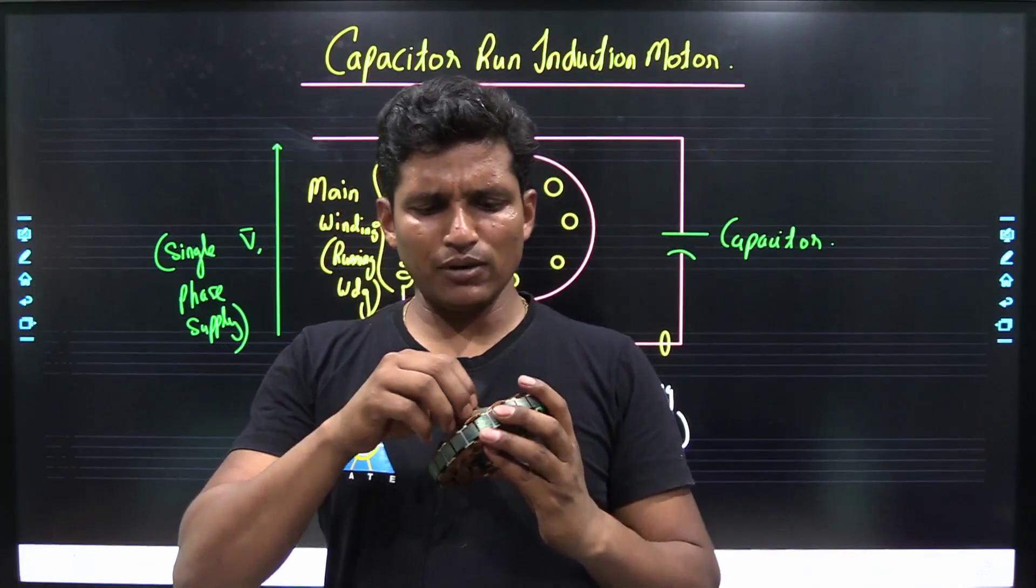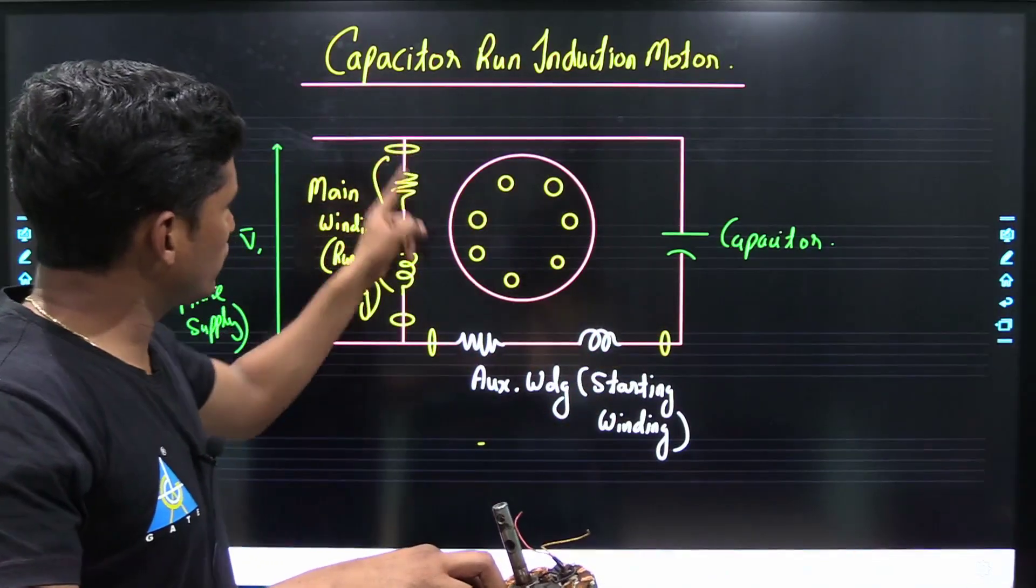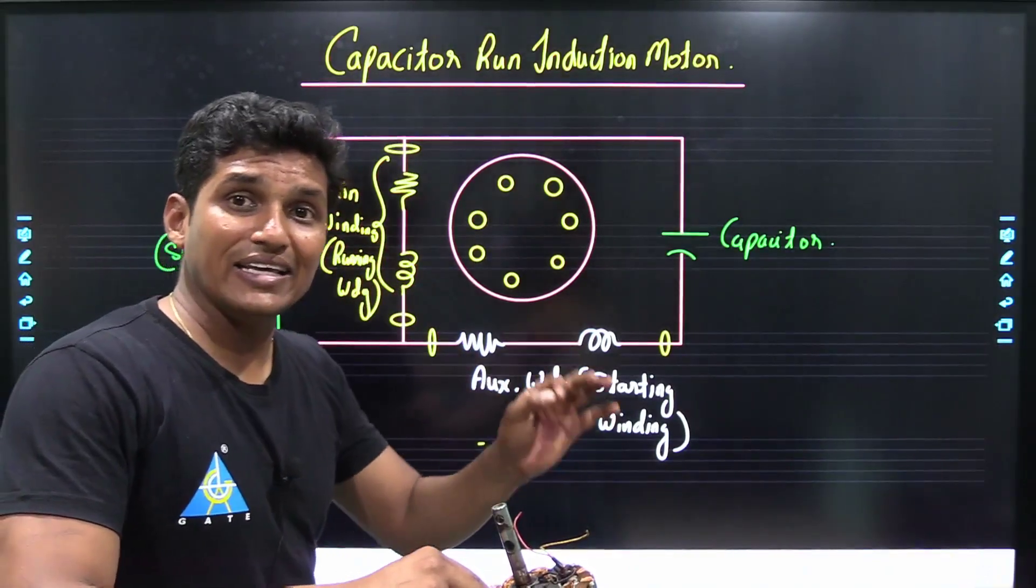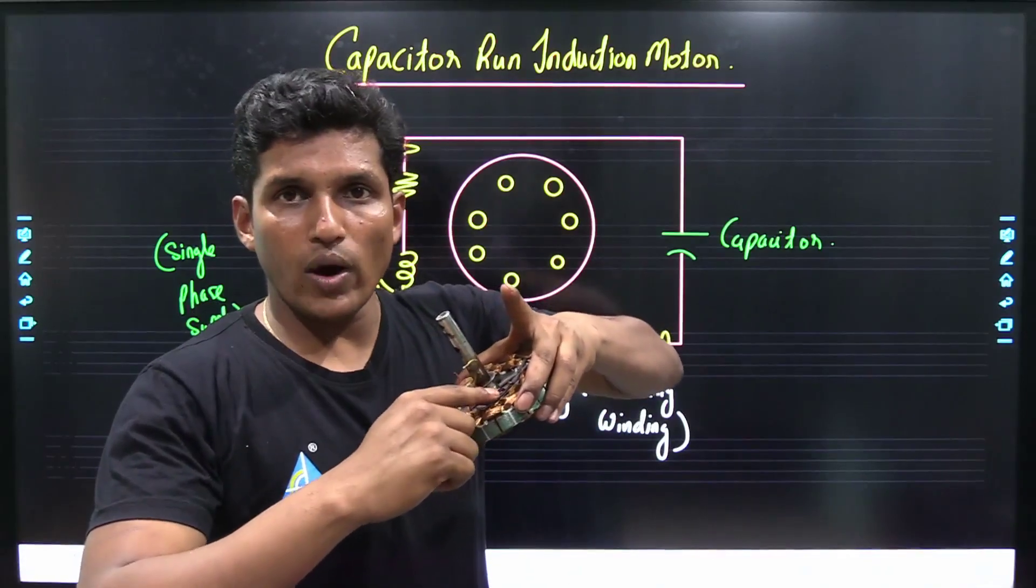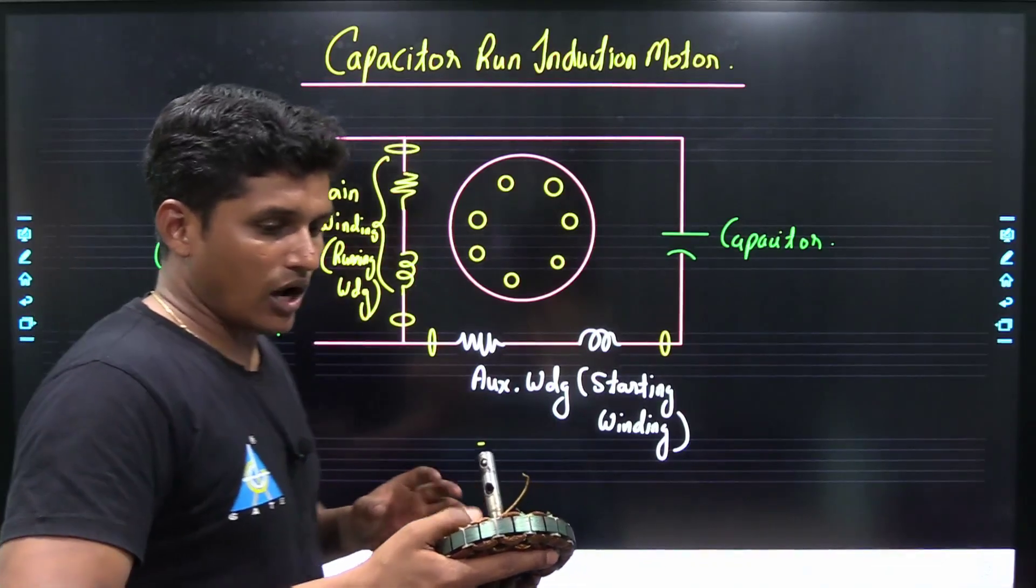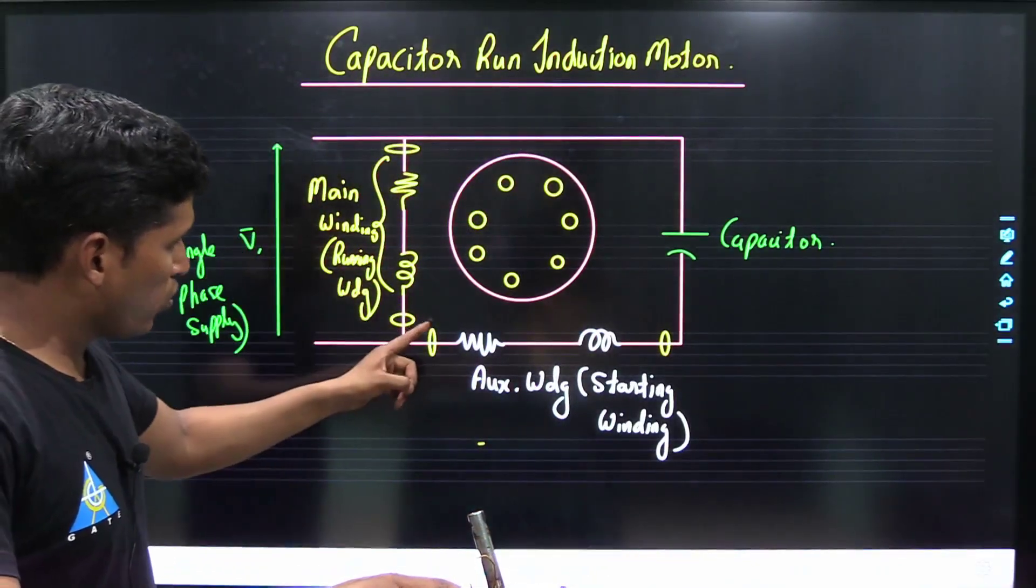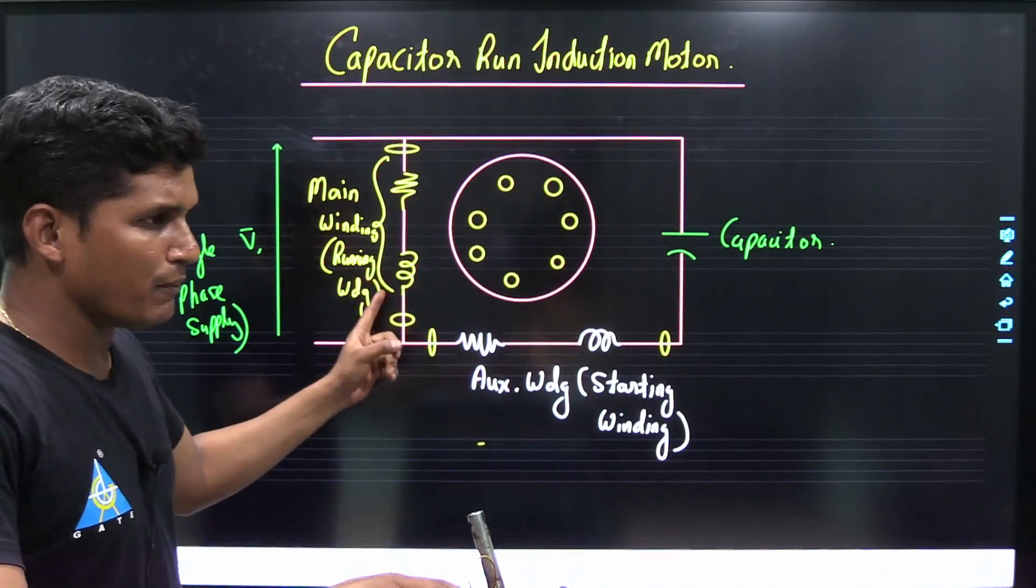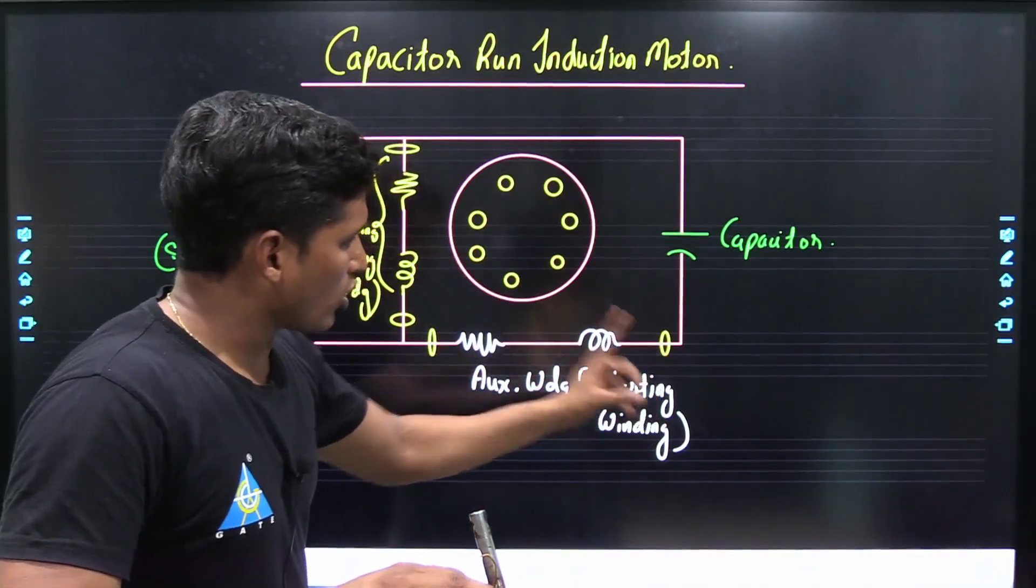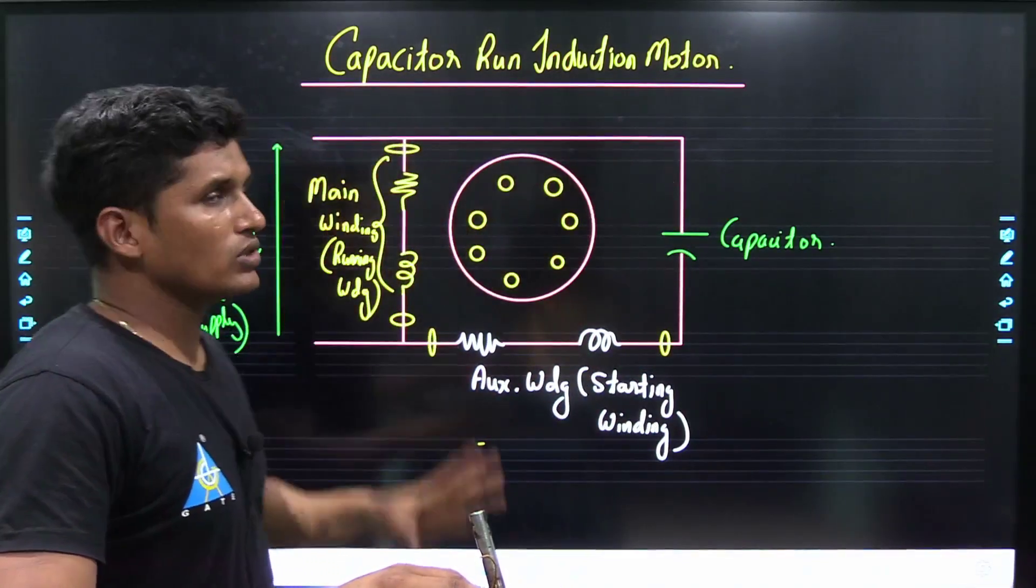In this, three terminals are available at the outside. Two terminals of main winding and auxiliary winding are made inside the winding and only one terminal is made outside. Now, out of these three terminals, one terminal which is the junction of the main winding and auxiliary winding is directly connected to the supply. Whereas the other two terminals, one of the auxiliary winding and one of the main winding, the auxiliary winding terminal is connected to the capacitor and with the help of the capacitor it is connected to the supply.